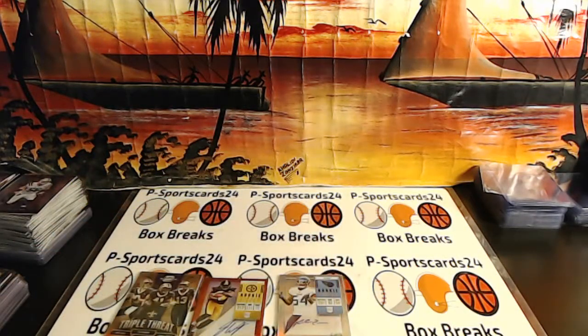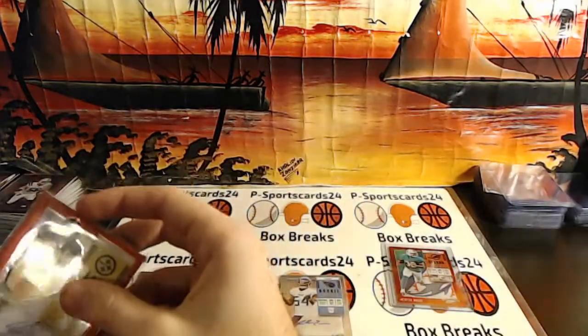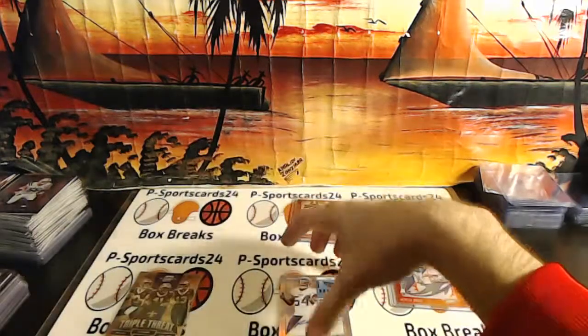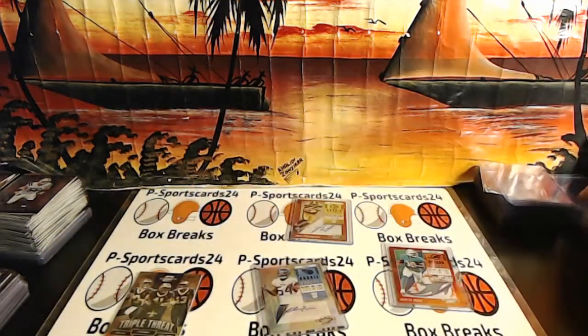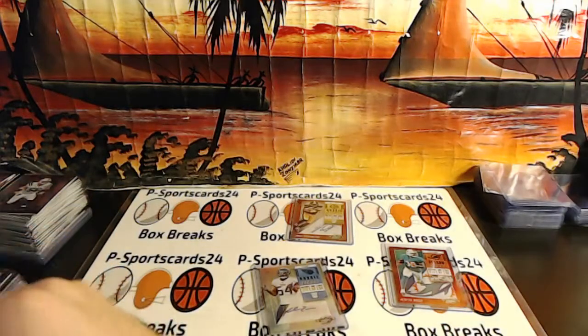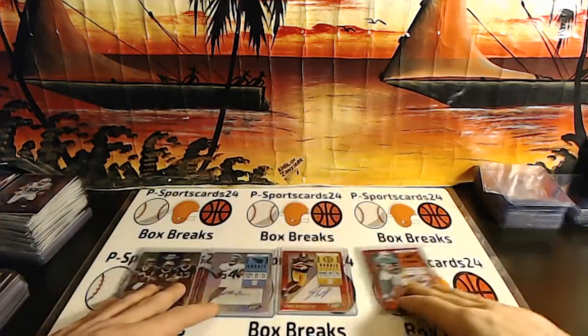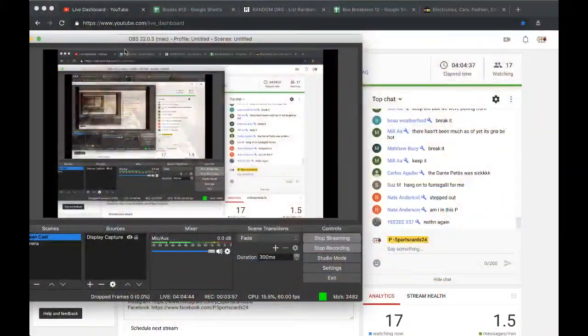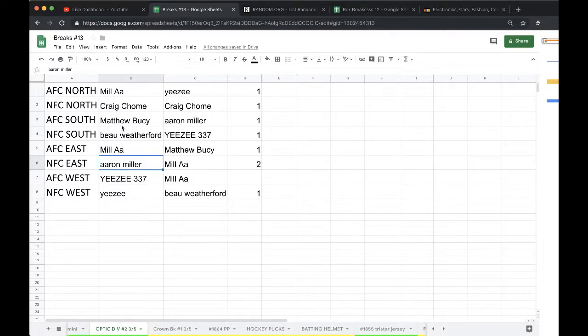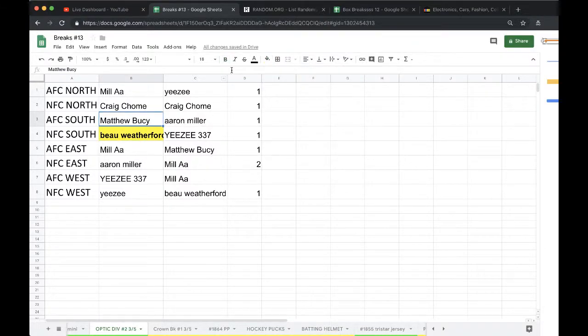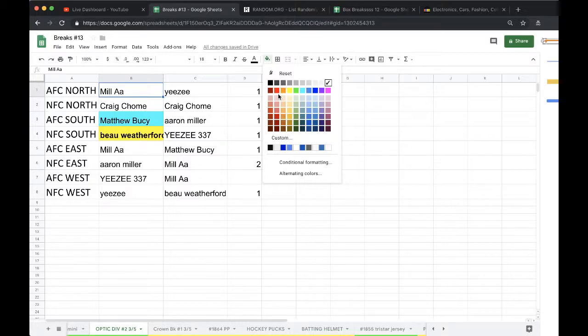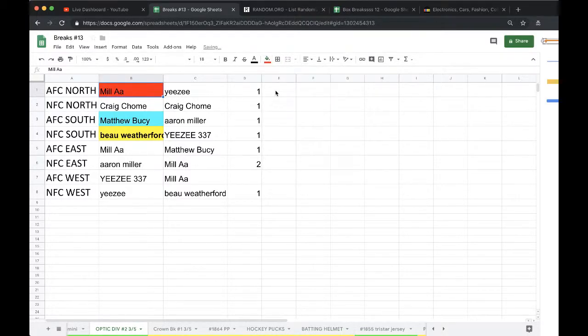AFC East, Kenyan Drake. AFC North, James Washington. Evans. Alright. New Orleans Saints, NFC South, Bo. Bo Leaf. Tennessee Titans, AFC South, Matthew Boosey. Pittsburgh Steelers, Aaron Miller. Pittsburgh Steelers. And then Kenyan Drake, AFC East, Aaron Miller. Aaron Miller got the Kenyan Drake.